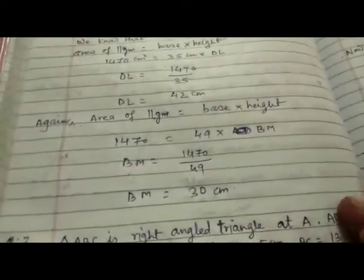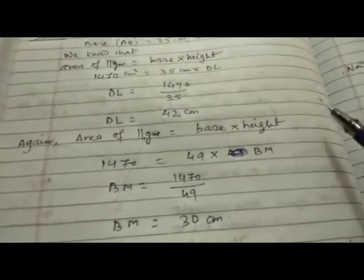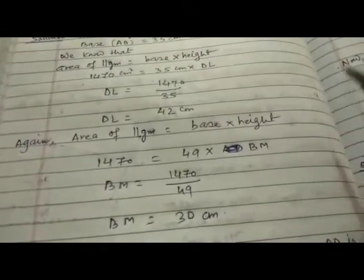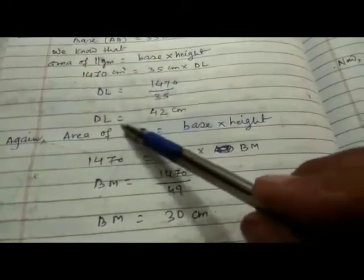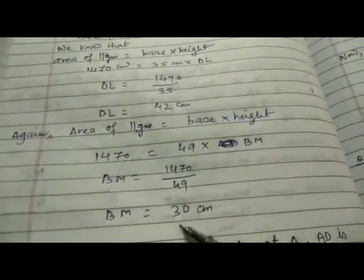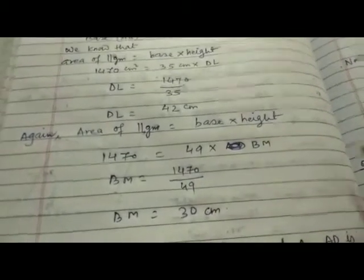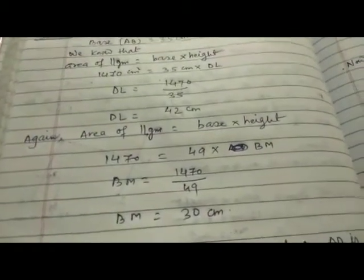Therefore the lengths of DL and BM, means the corresponding altitudes, DL equals 42 centimeter and BM equals 30 centimeter. Okay, thank you.